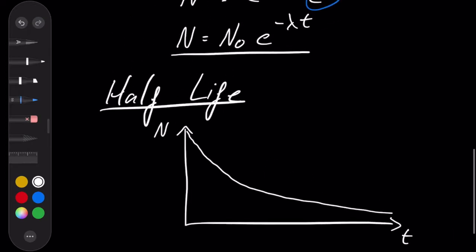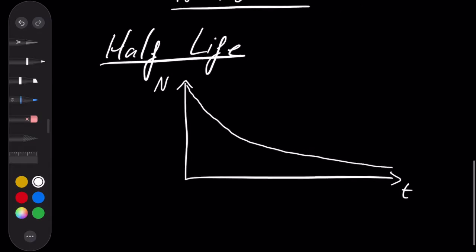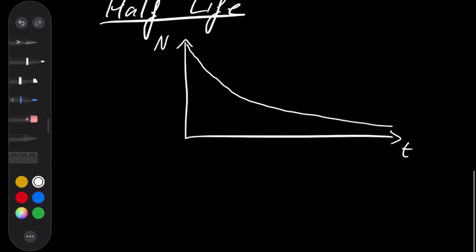This exponential curve has a bunch of interesting properties, but one of them is if you take your starting value and halve it and plot across, you get to this value that we call the half-life.